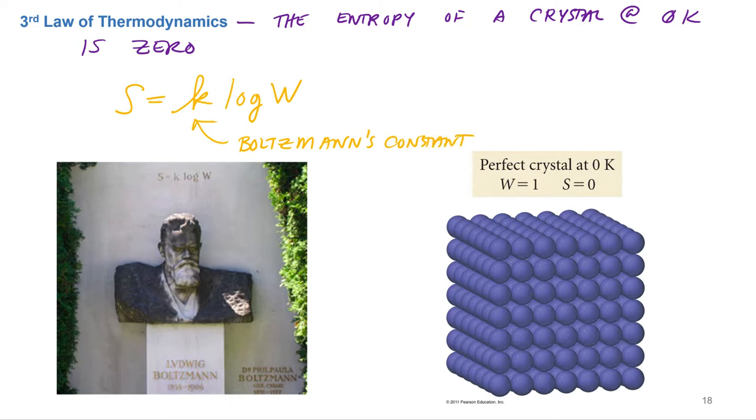That W, if you go back to the technical definition of entropy, is the number of ways a system can store energy. That's what that W is, the number of ways a system can store energy.